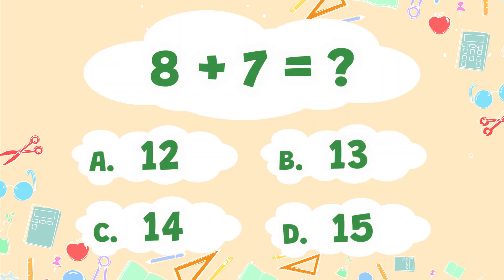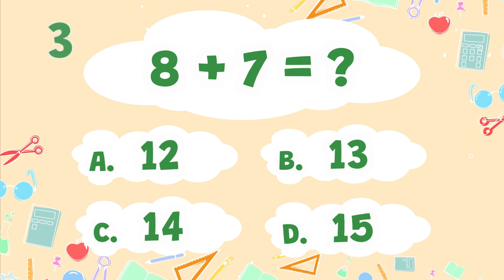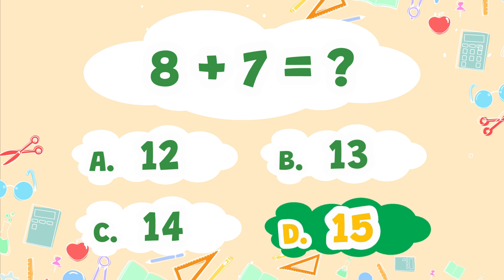What is 8 plus 7? A. 15, B. 13, C. 14, D. 15. The correct answer is D. 15.